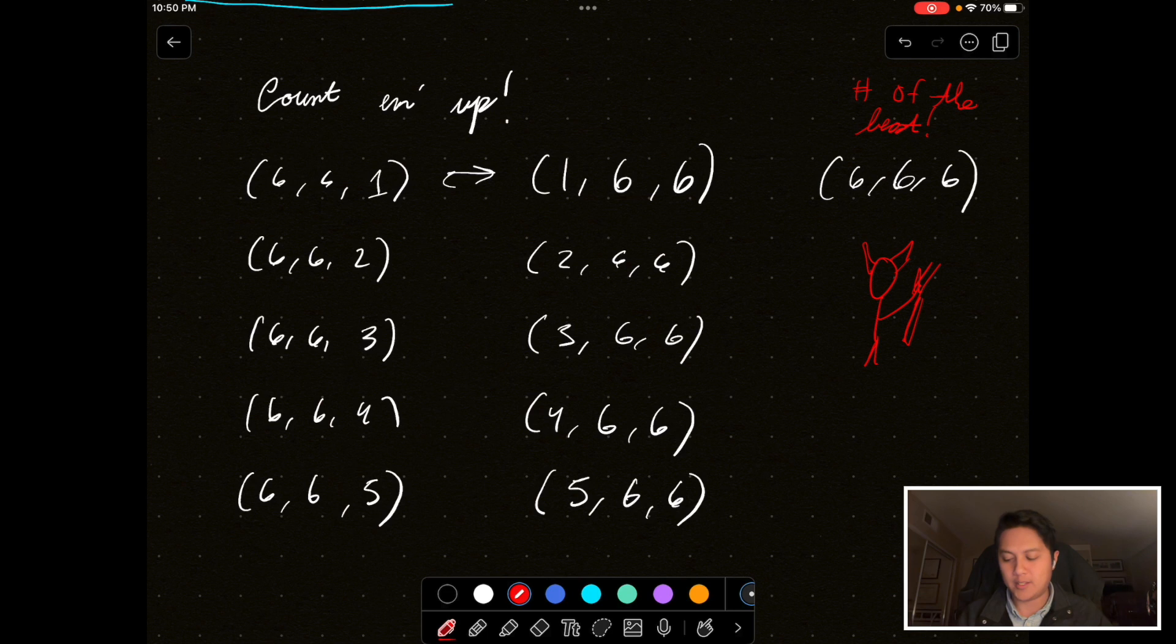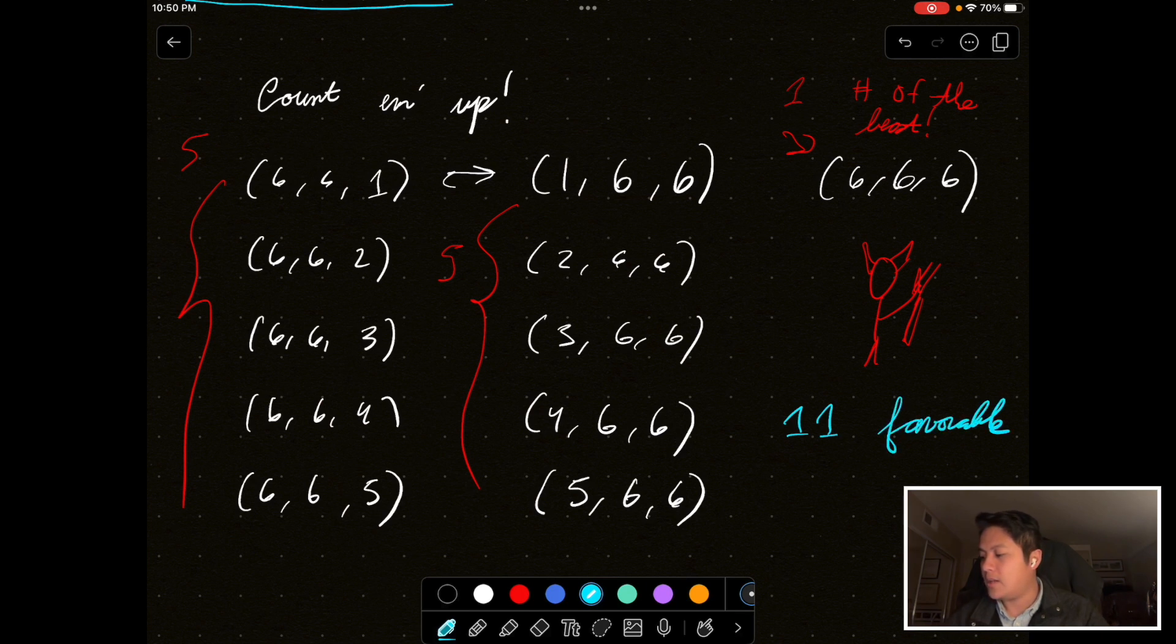Okay, anyway, so now that we got that out of the way, how many outcomes are there? There are five here, five here, for that case, and there's one here. So, we have 11, I'll call them favorable, 11 favorable outcomes.